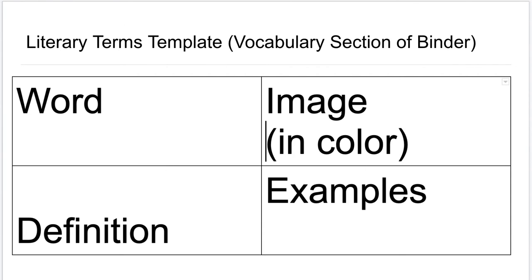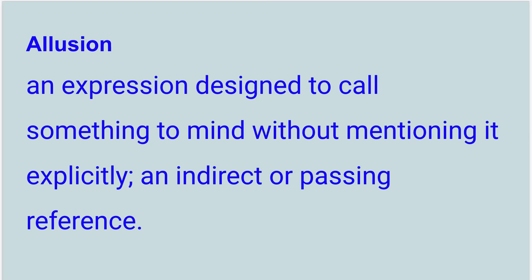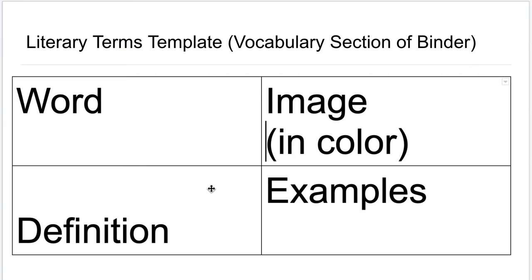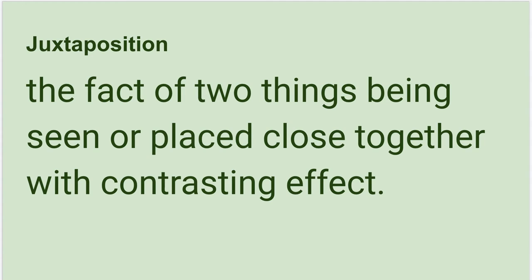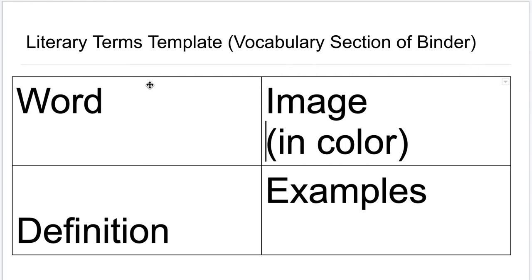Copy this template. The second page in the vocabulary section of your binder, you want to create two charts — two word boxes. Allusion and juxtaposition are the two words. Page one says 'literary terms template' and you copy this template. Page two will have two word boxes: one for allusion with its definition blank, and the second for juxtaposition with its definition blank.